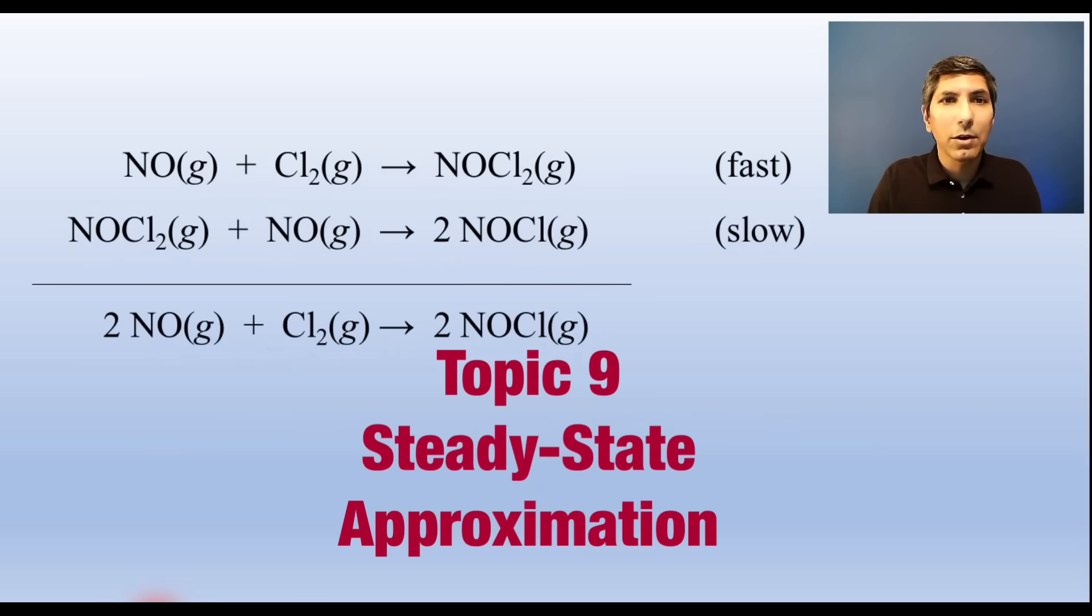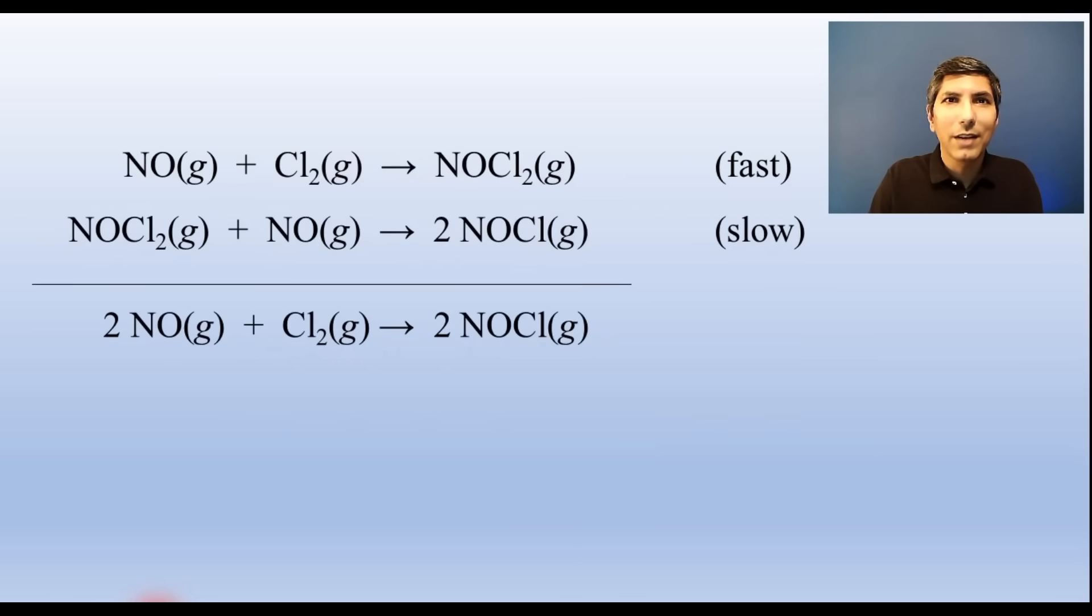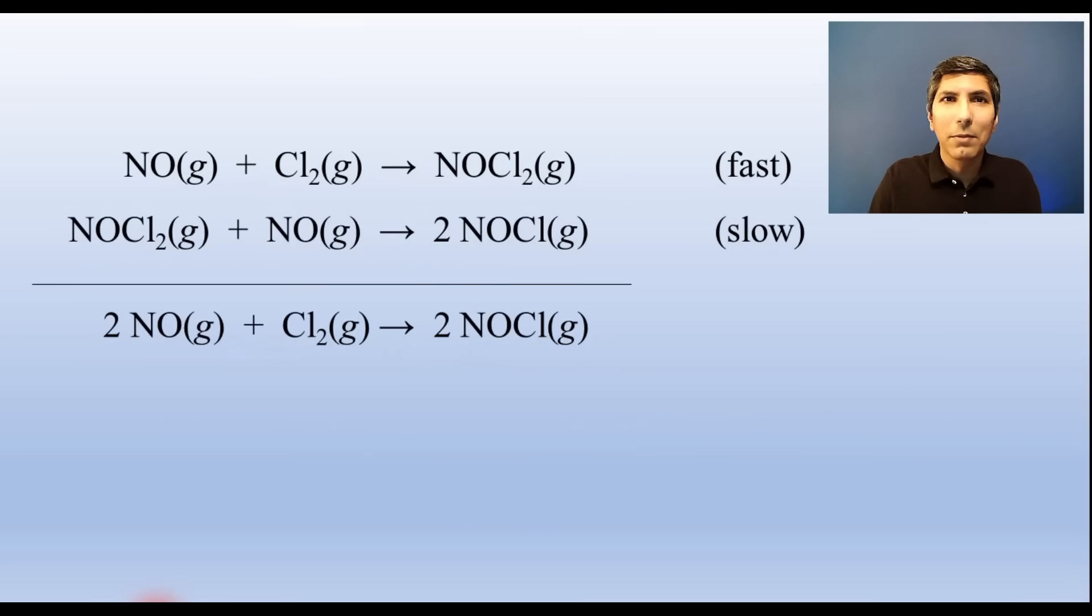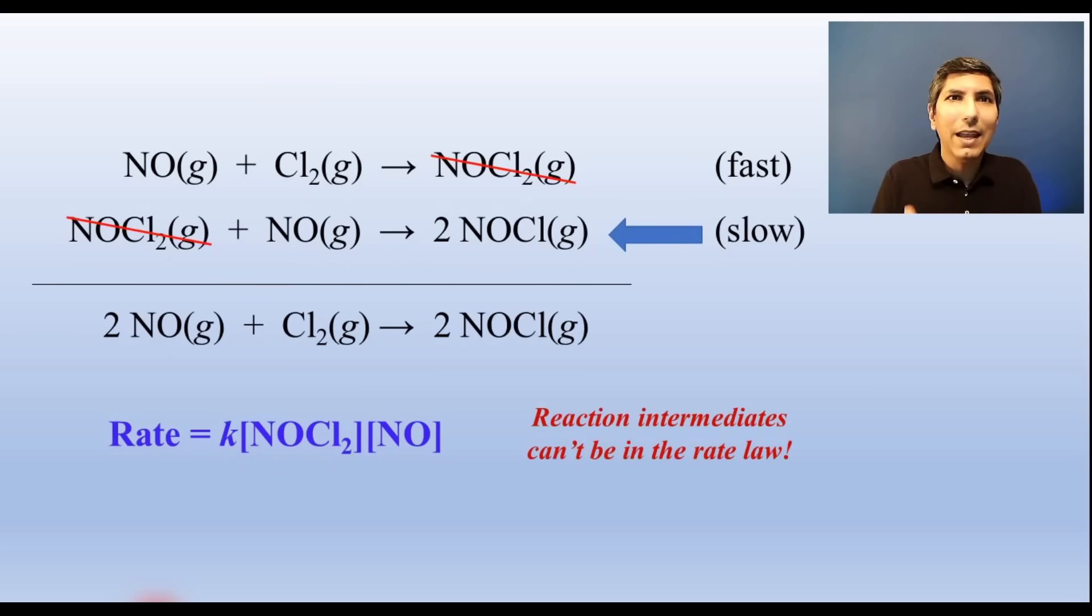When we have a mechanism where the slow step isn't the first step, this causes a little problem in writing the rate law. The slow step still determines the rate, but notice that if we write that as the rate law, we end up with a reaction intermediate in the rate law. And you can't have something in the rate law that isn't in your overall balanced equation. So we have to determine the rate law for the formation of that intermediate and plug it in where that intermediate showed up in our proposed rate law. So by doing this, we end up with the actual rate law for the reaction.